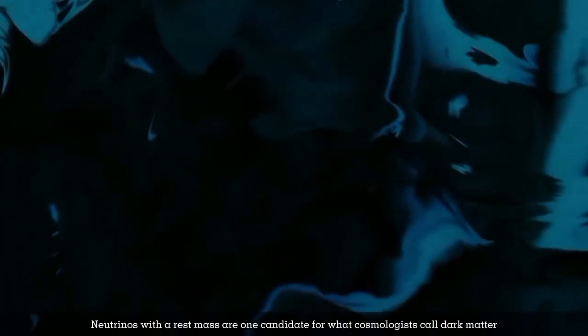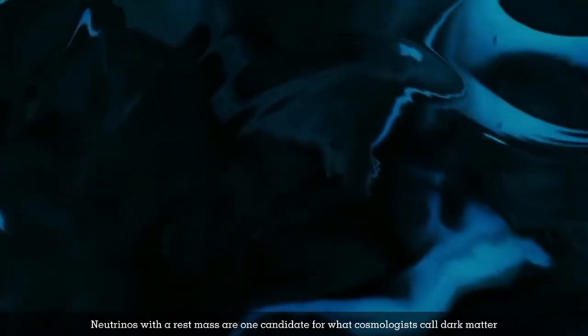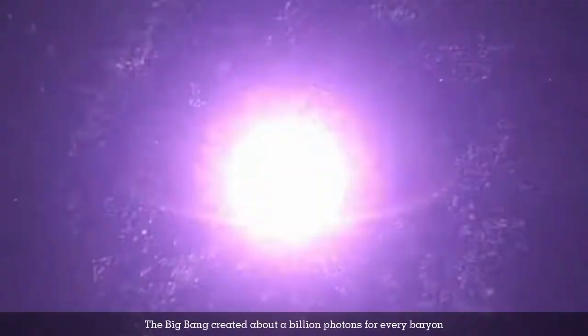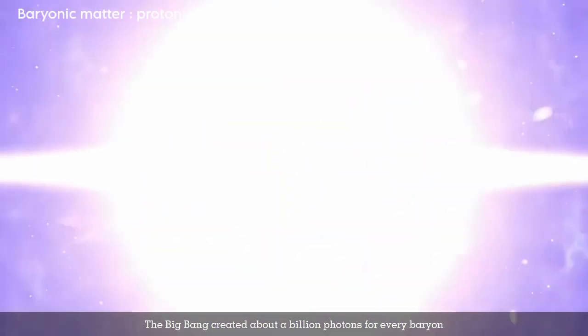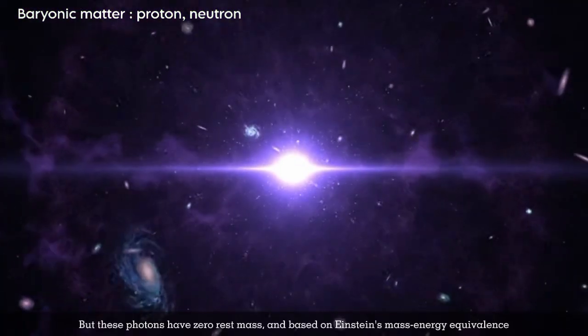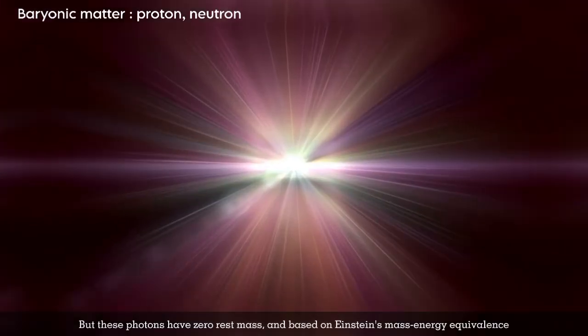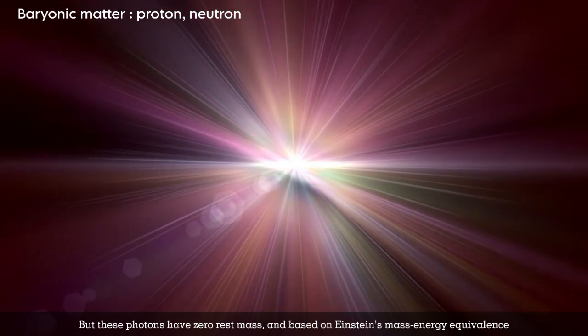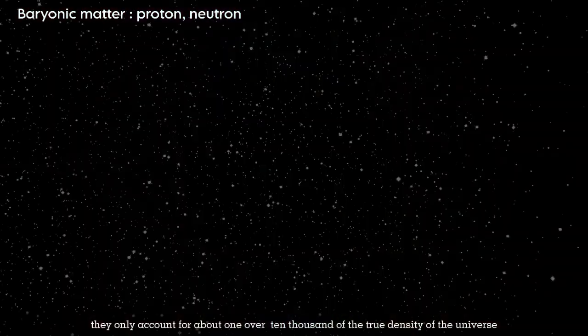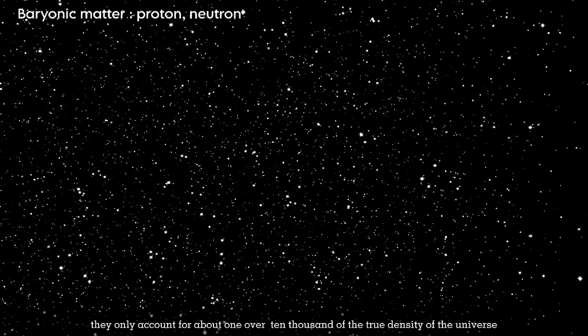Neutrinos with rest mass are one candidate for dark matter. The Big Bang created about a billion photons for every baryon. But these photons have zero rest mass, and based on Einstein's mass-energy equivalence, they only account for about 1/10,000 of the true density of the universe.